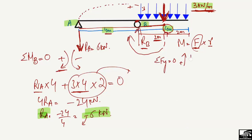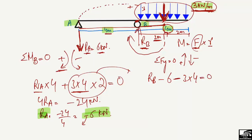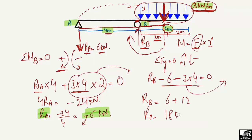To find RB, we use the summation of vertical forces equal to zero. Upward forces are positive, downward forces are negative. RB is the only upward force. Downward forces are RA = 6 kN and the UDL: 3 kN/m × 4 m = 12 kN. Solving gives RB = 6 + 12 = 18 kN, acting upward as assumed.